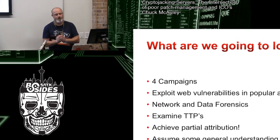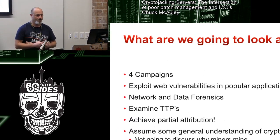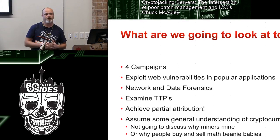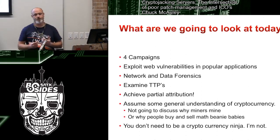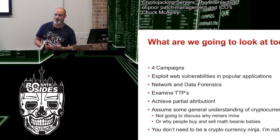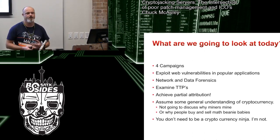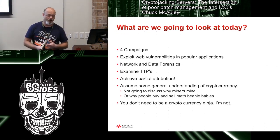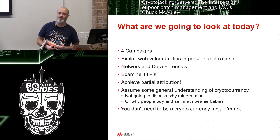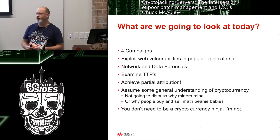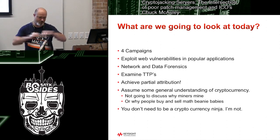Today we're going to be looking at four specific malware campaigns that we dug up out of our honeypot logs, and looked into how they worked, what they were digging up, and how much money they were making. They all use web exploit vectors. We'll look at networking data forensics you can apply yourself, the tools, tactics, and procedures used to deploy this stuff, how they land it and run it. We'll even get some partial attribution — unfortunately it's just a long number representing a wallet, but at least it's a wallet.